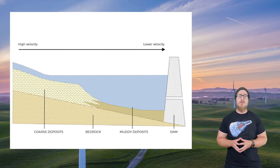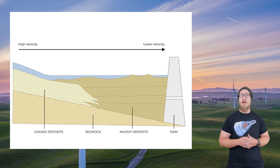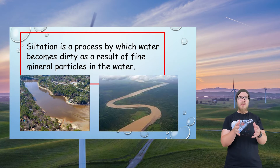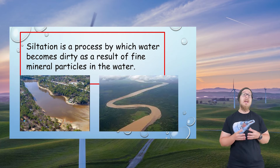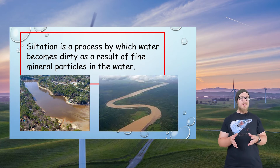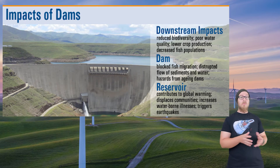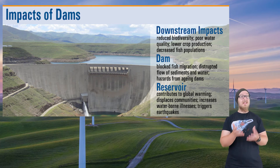Instead of sediment going downstream, it is trapped by a dam. The sedimentation builds up on the face of the dam, taking up space and eventually leading to upstream flooding. It also causes siltation of the river, creating murky water conditions. This increased turbidity makes it difficult for river producers like cyanobacteria and algae to get enough sunlight for photosynthesis, disrupting river food webs and altering water quality. Downstream from the dam, water is held back, reducing the flow speed of the river and making less water available for ecosystems and humans.